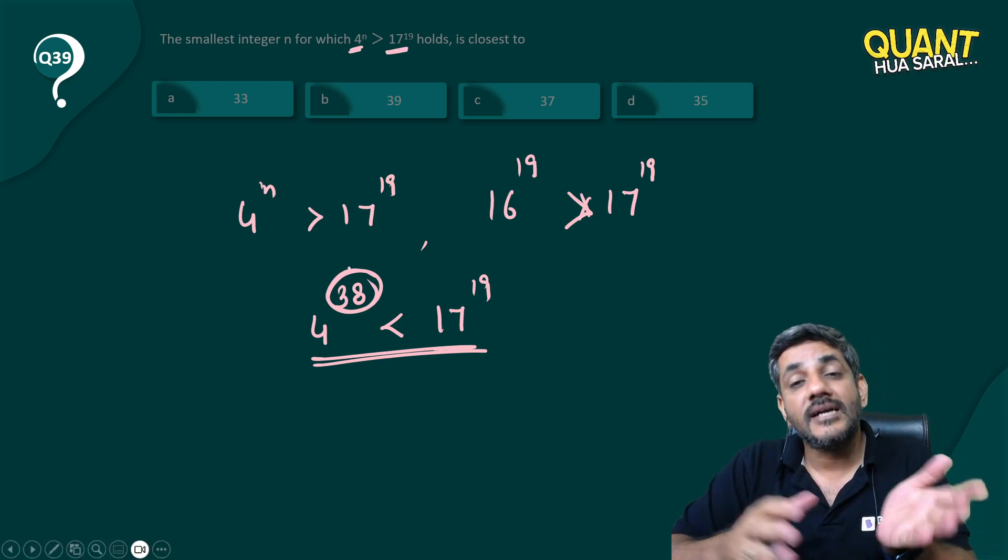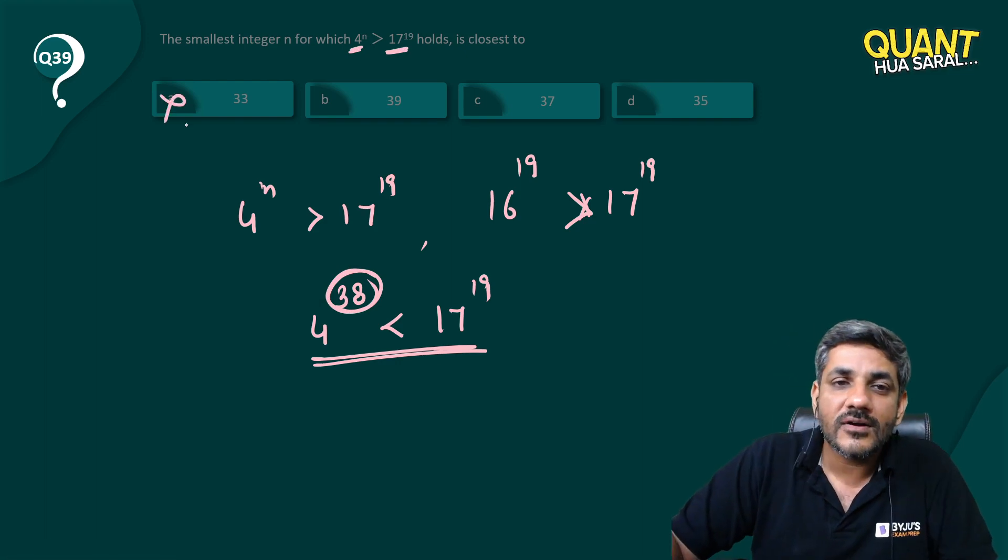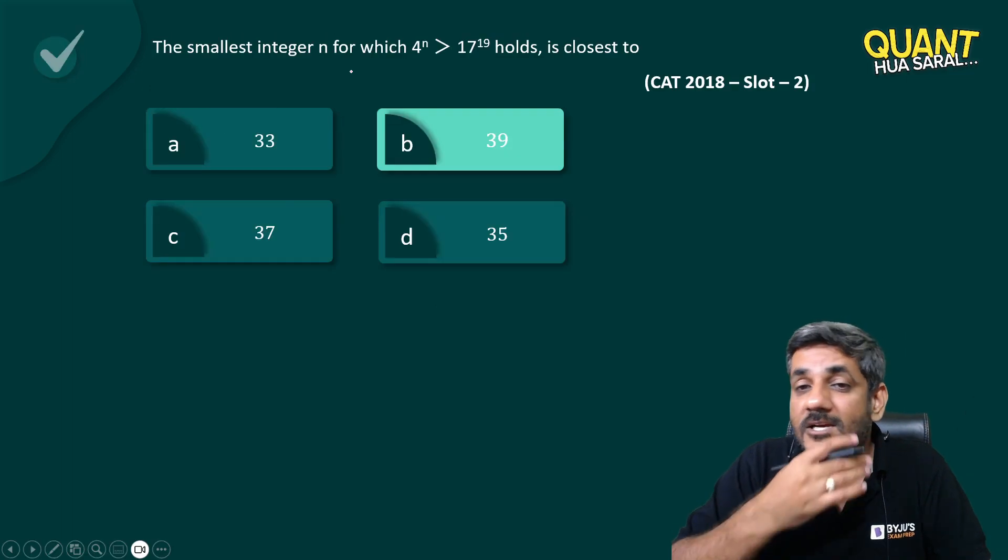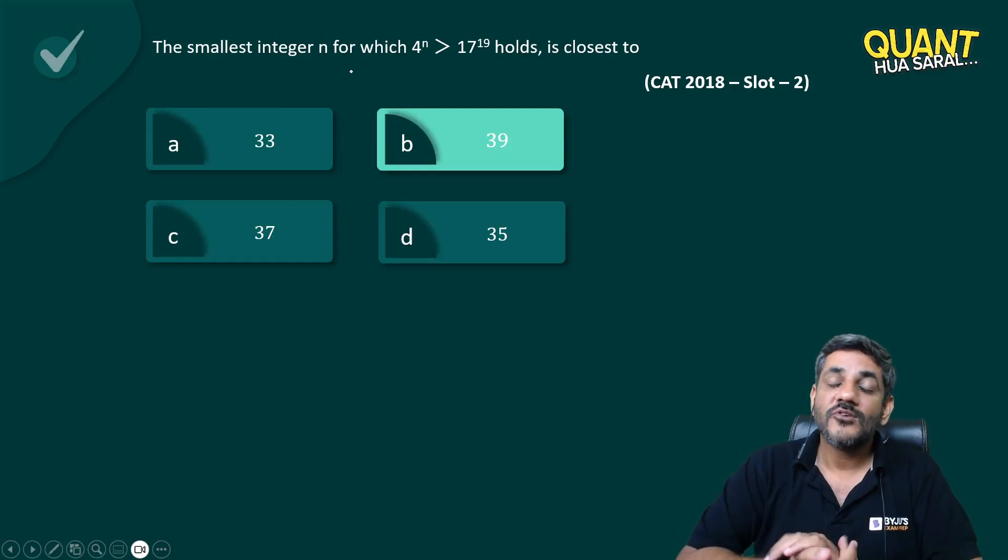So power should be greater than 38. This is not greater than 38, this is not greater than 38, this is not there. The answer is option b which equals 39. That's an aptitude way of solving it.